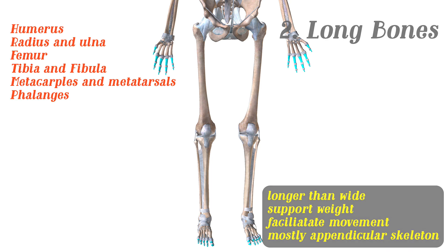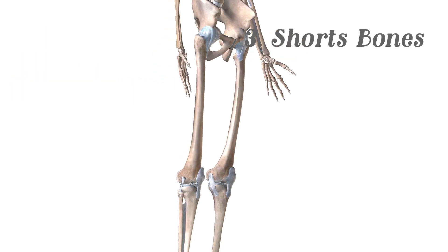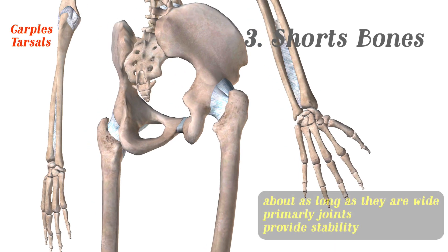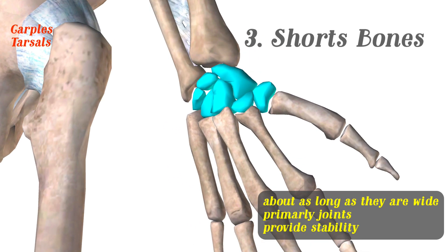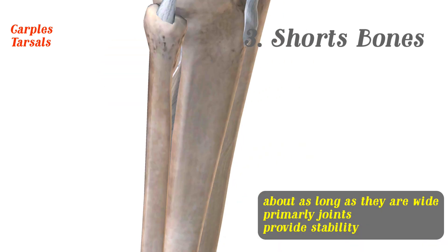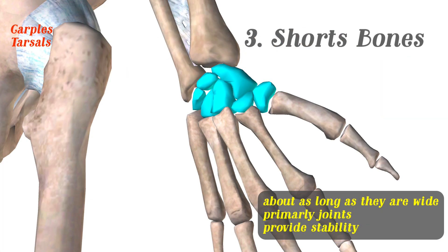From long bones, we go to short bones. These short bones are typically found in your joints, like in your carpals — your wrists — and the tarsals and the ankles. These bones are about as wide as they are long, and they serve for stability.